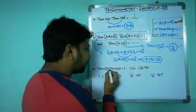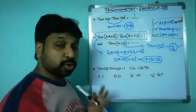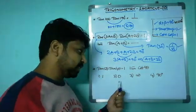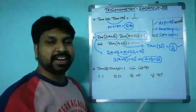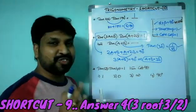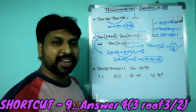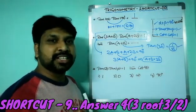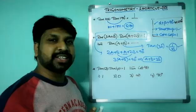Coming to the next question: tan 5θ × tan 4θ = 1, find cot 9θ. Options are 1, 0, infinite, and 90°. This question is for you — please solve it and post your answer in the comment box.